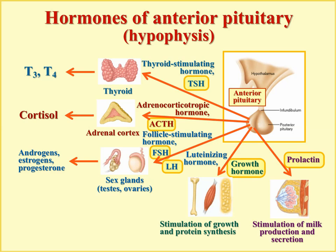The important difference is that TSH, ACTH, FSH, and LH function by stimulating secretion of peripheral hormones. Growth hormone and prolactin do not stimulate peripheral hormone secretion — growth hormone stimulates secretion of insulin-like growth factors from the liver, but these are not the same as peripheral endocrine hormones. This difference is important for the feedback regulation, specifically the negative feedback considered later.